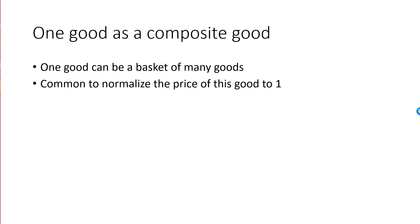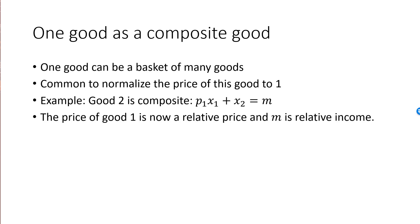For example, if the second good is our basket, then the equation of the budget line will read p1x1 plus x2 is equal to m. However, keep in mind that p1 is now no longer the price of good 1, and m is no longer our income in our currency.